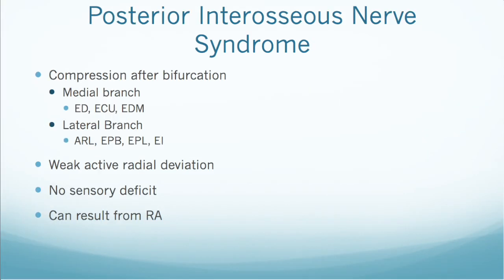The third condition is posterior interosseous nerve syndrome. After the radial nerve goes through the supinator muscle, it emerges as the posterior interosseous nerve, which then bifurcates into a medial and lateral branch. Compression can occur before or after this bifurcation. If it occurs after on the medial branch, certain muscles are affected; if it occurs on the lateral branch, other muscles are affected, as listed here. If the compression occurs before the nerve splits into those branches, then all of those muscles are affected.